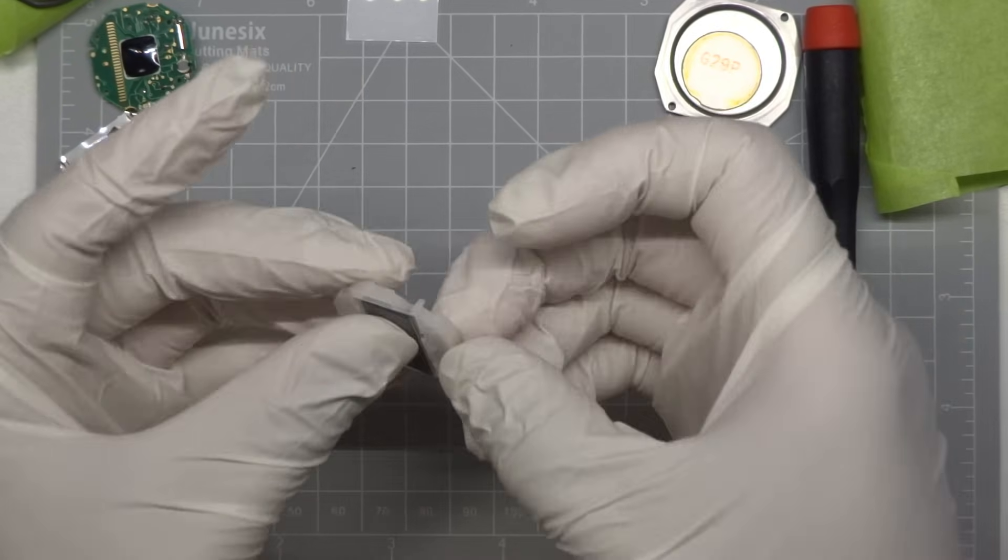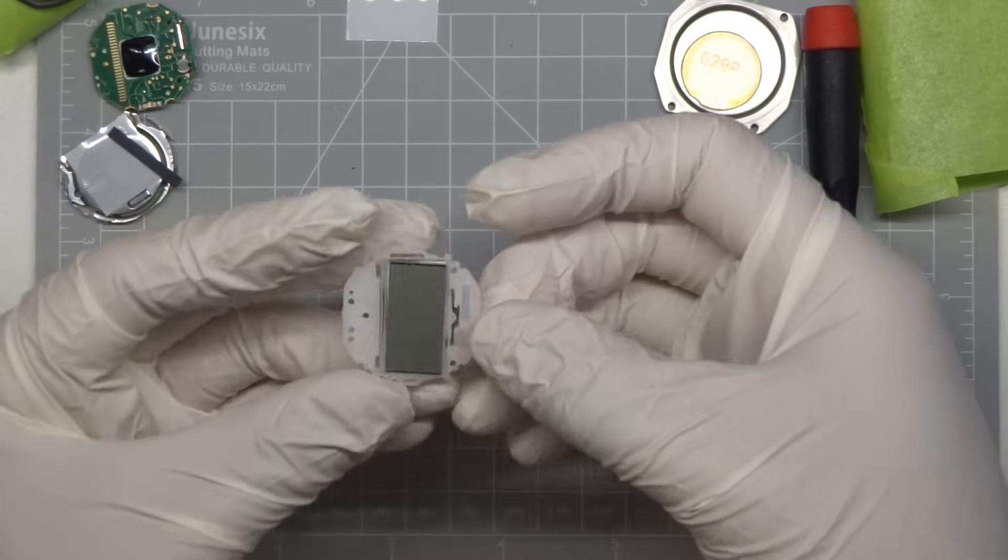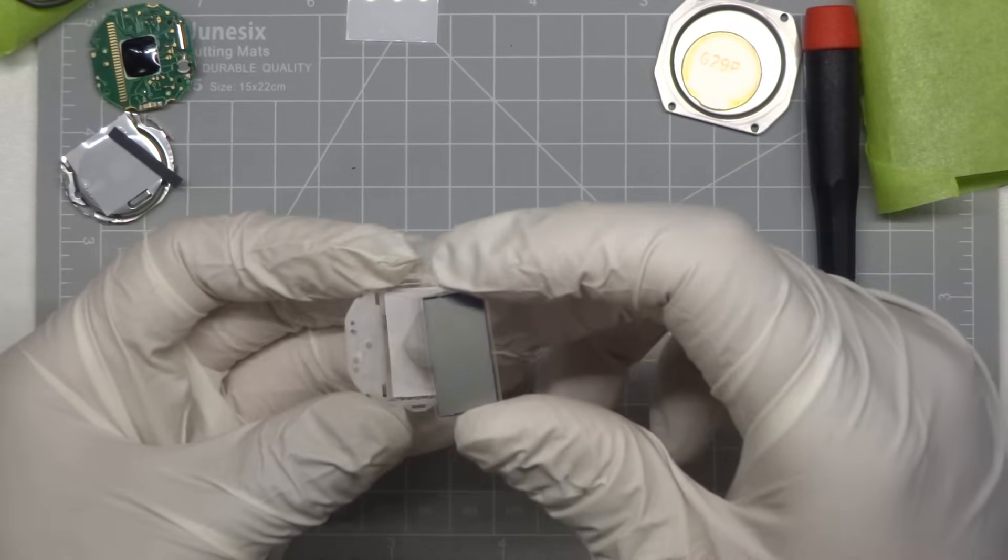Occasionally, the insertion of the glass will push the light spreader out of its indent and prevent the glass from being fully inserted. If this happens, remove the glass to reposition the light spreader and try again.